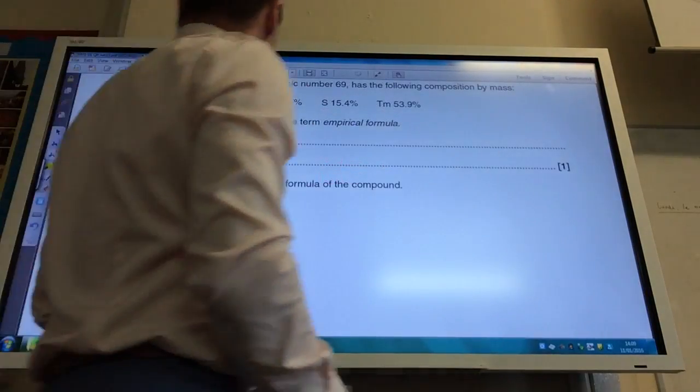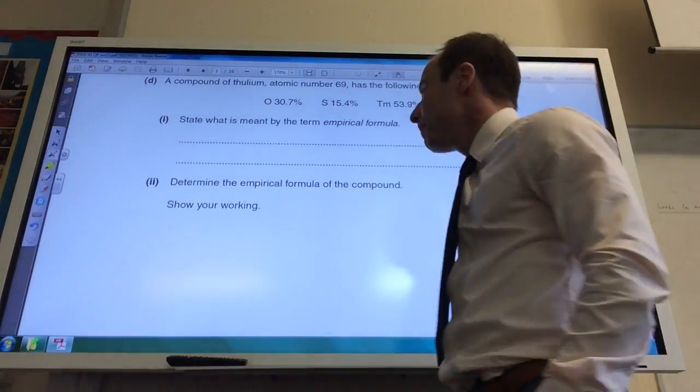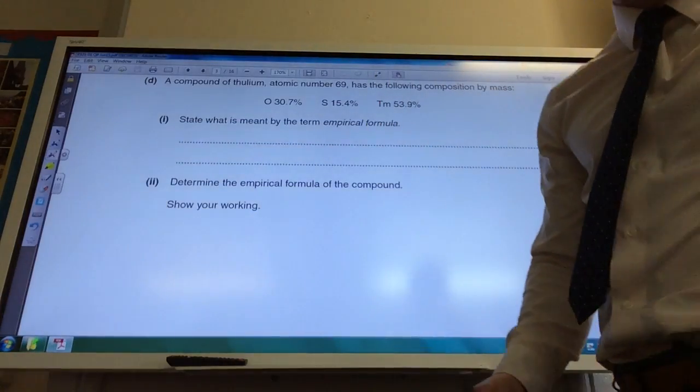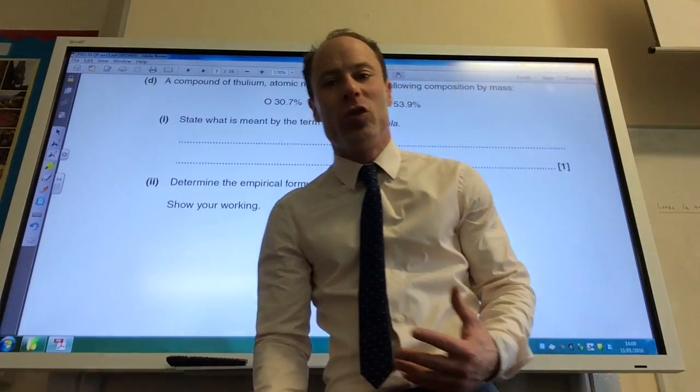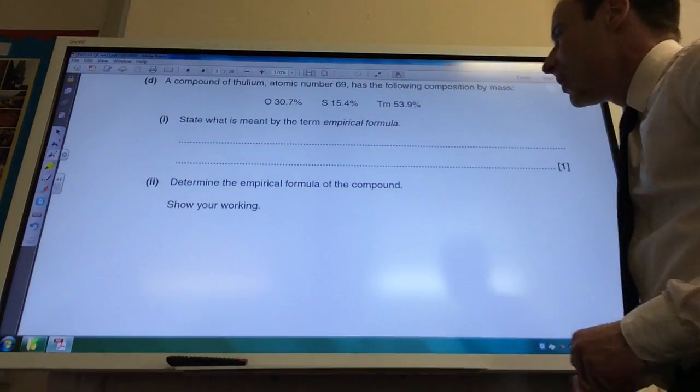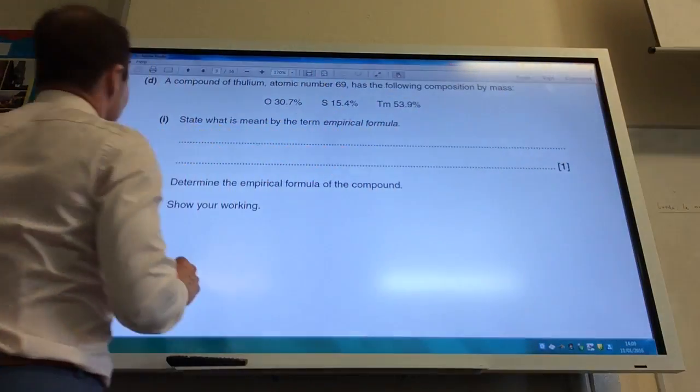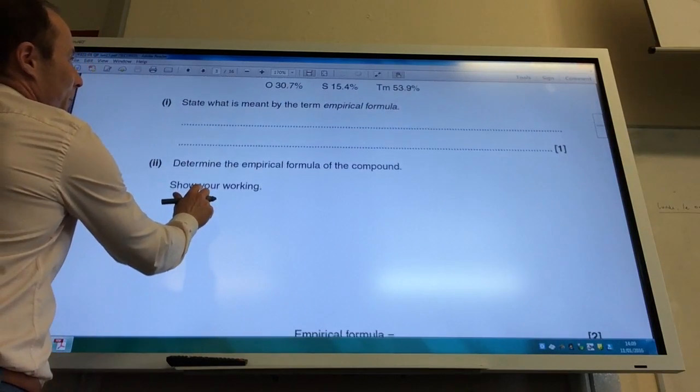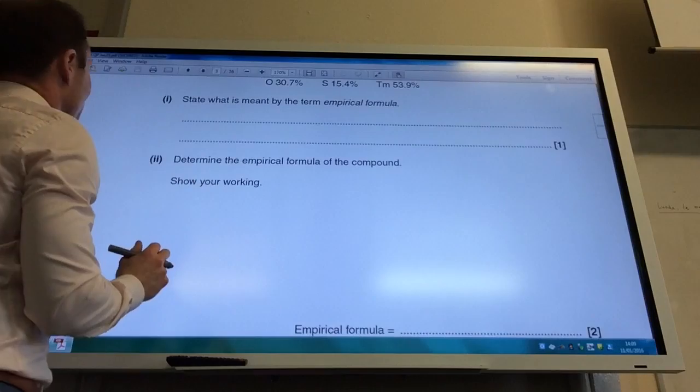We're now going to look at some empirical formulas. What is meant by the term empirical formula? That's straight off definition: it's the simplest whole number ratio of atoms in a compound. Determine the empirical formula.